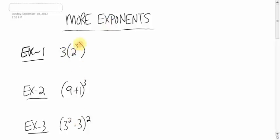3 bracket 2 to the power 3 bracket. Of course, there's nothing in between the 3 and the bracket, so that means we're going to multiply here. And this is an exponent, according to BEDMAS, we do the exponents first.